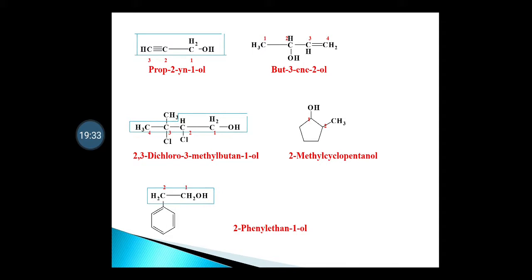For cyclic alcohols, we select the cyclic group and name it as a cycloalkanol. For aromatic-substituted alcohols, the side chain bearing the OH group is the main chain, and the benzene ring becomes the substituent, called phenyl. For example, a 2-carbon chain with an OH on carbon 1 and a phenyl group at carbon 2 is named 2-phenylethane-1-ol.